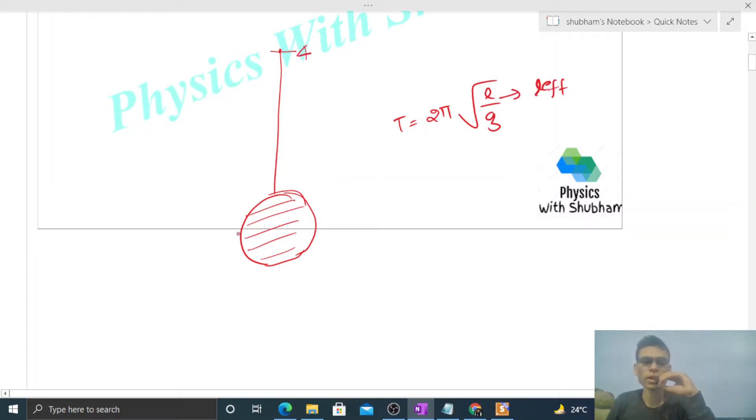Initially when this hollow sphere was completely filled with water, then center of mass of this pendulum will be at the center. So this was the effective length.